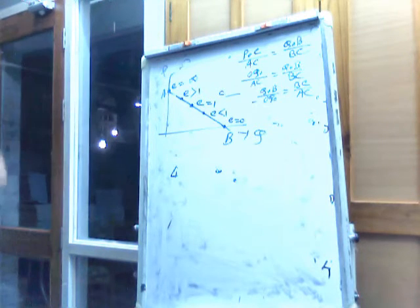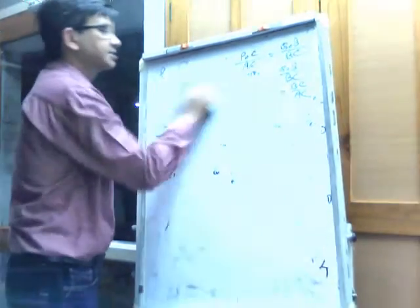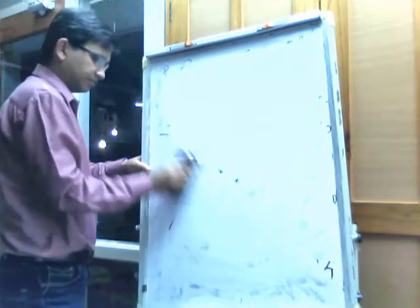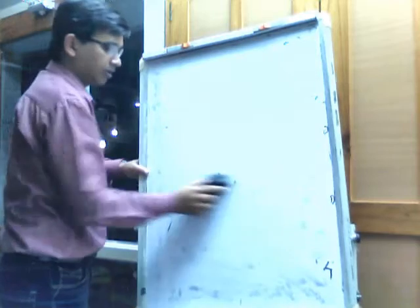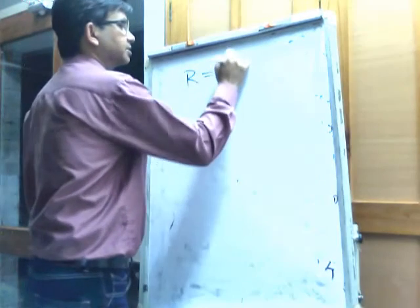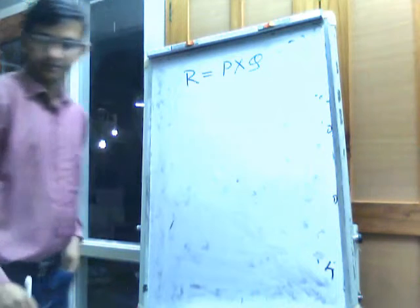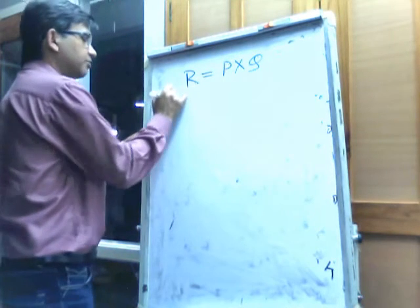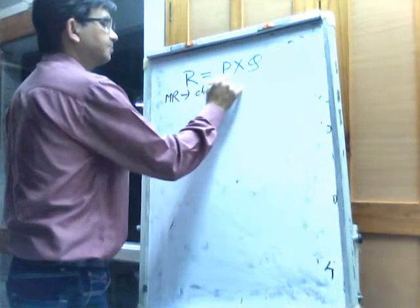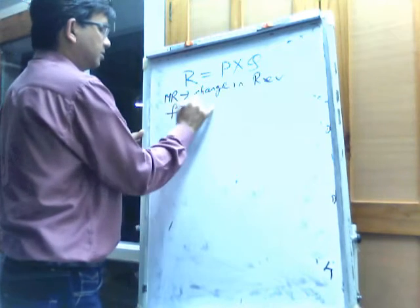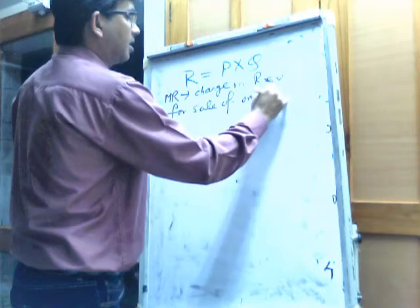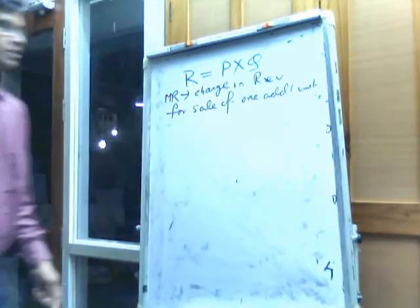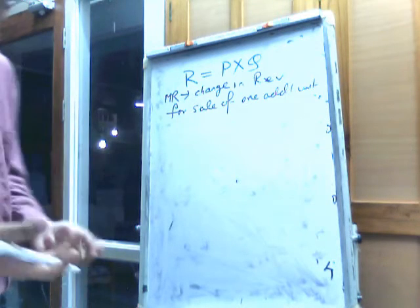The next part is the relationship between price, marginal revenue, and price elasticity of demand. First, total revenue is price multiplied by quantity sold. Marginal revenue means the change in revenue for the sale of one additional unit — that is, if we increase the sale by one unit, what is the impact on revenue?